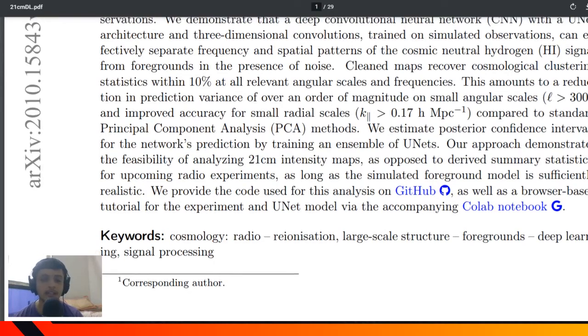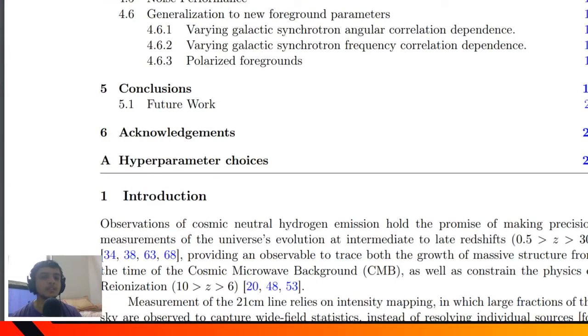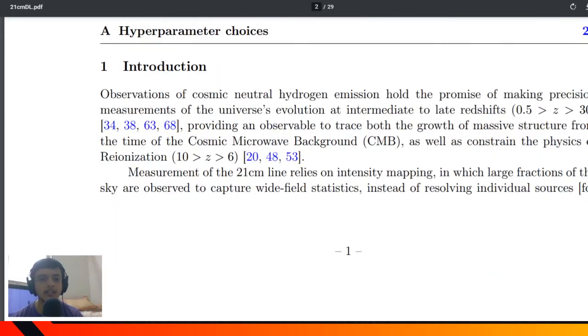I'll first focus on the paper itself and what it's trying to achieve. This intensity mapping - hydrogen emissions help make precision measurements of the universe's evolution during this red-shifted era. The hydrogen emission helps us estimate or trace the growth of massive structures like galaxies and how they form.